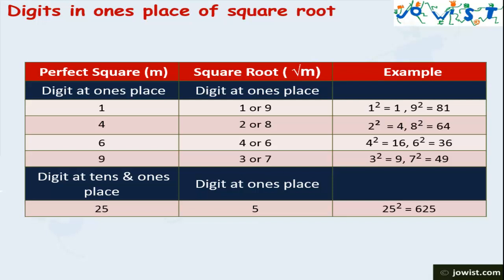A perfect square number having 2 in its 10's place and 5 in its 1's place — that is, ending in 25 — will have 5 in the 1's place of its square root. For example, the square of 25 is 625, and 625 has 2 in its 10's place and 5 in its 1's place. This chart will make your calculations easier.